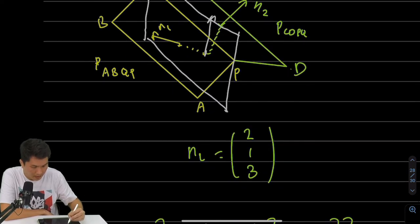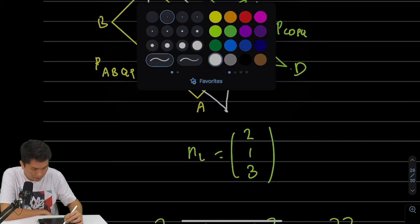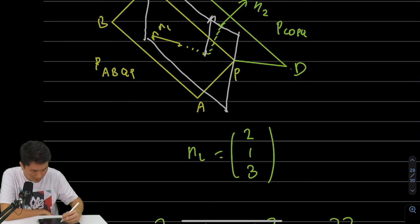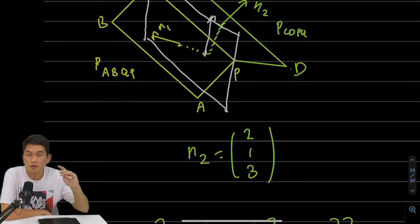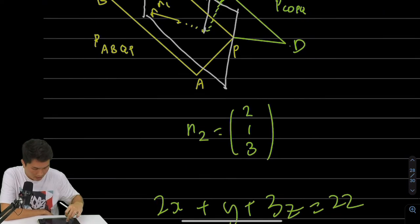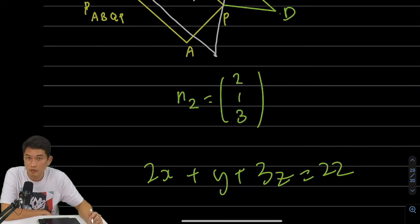If I draw a vertical plane that passes through Q and P, it looks like this. There is symmetry between the two normal vectors. Therefore, the normal vector n2 should be (2, 1, 3). The question says, hence, show the equation of the right slanted roof is 2x + y + 3z = 22. No problem.